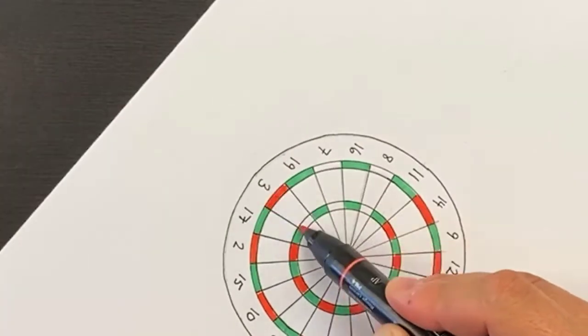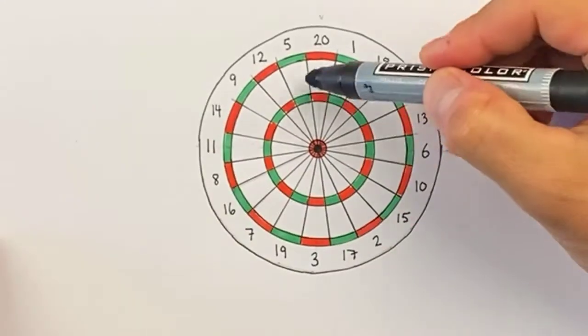We'll color this in. All right, we just finished our dartboard and colored it in using some red and green, and remember to kind of leave some white areas in between.